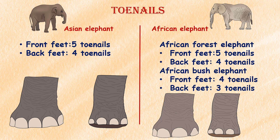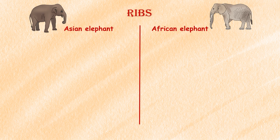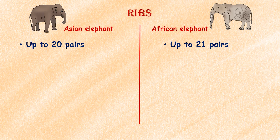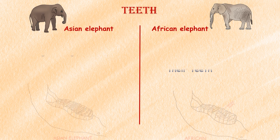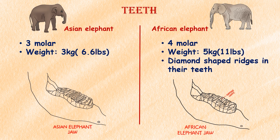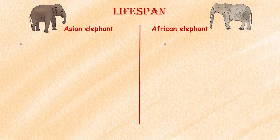Ribs: The number of ribs in African elephants can go up to 21 pairs, whereas Asian elephants have an average of 20 pairs. Teeth: African elephants have four molars, each weighing about 5 kilograms or 11 pounds. Asian elephants have only three molars, weighing about 3 kilograms or 6.6 pounds. African elephants also have diamond-shaped ridges in their teeth, unlike Asian elephants.